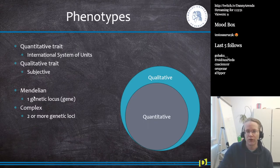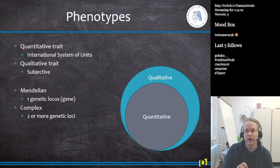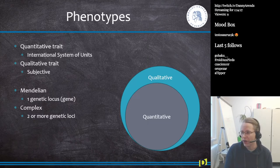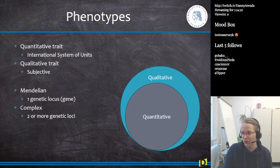Phenotypes are divided into Mendelian phenotypes, where there's one genetic locus — the best example is dry versus wet earwax, controlled by a single gene. However, the most interesting phenotypes are complex phenotypes, meaning two or more regions in the genome are involved. A standard example of a complex phenotype is obesity — literally 50 to 100 genes have been identified as involved, and all of these genes interact with the environment. Having a certain gene doesn't mean you become obese; it only has its effect when certain environmental conditions are met.